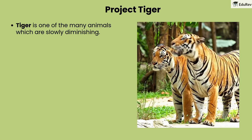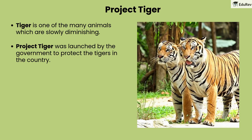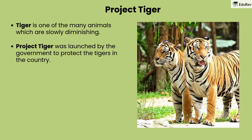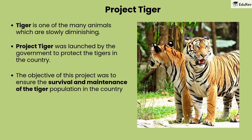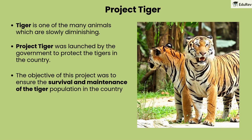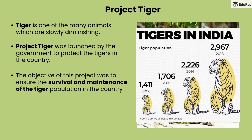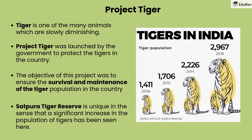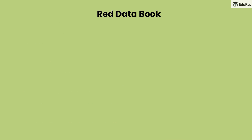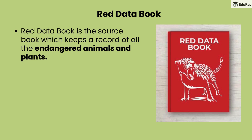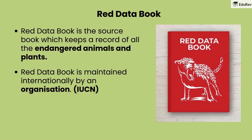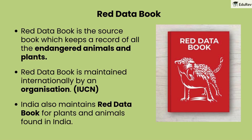Do you know about Project Tiger? The tiger is one of the many animals which are slowly diminishing. Project Tiger was launched by the government to protect tigers in the country, with the objective of ensuring the survival and maintenance of the tiger population. Satpura Tiger Reserve is unique in that a significant increase in the tiger population has been seen here. The Red Data Book is a source book that keeps a record of all endangered animals and plants, maintained internationally by an organization. India also maintains its own Red Data Book for plants and animals.